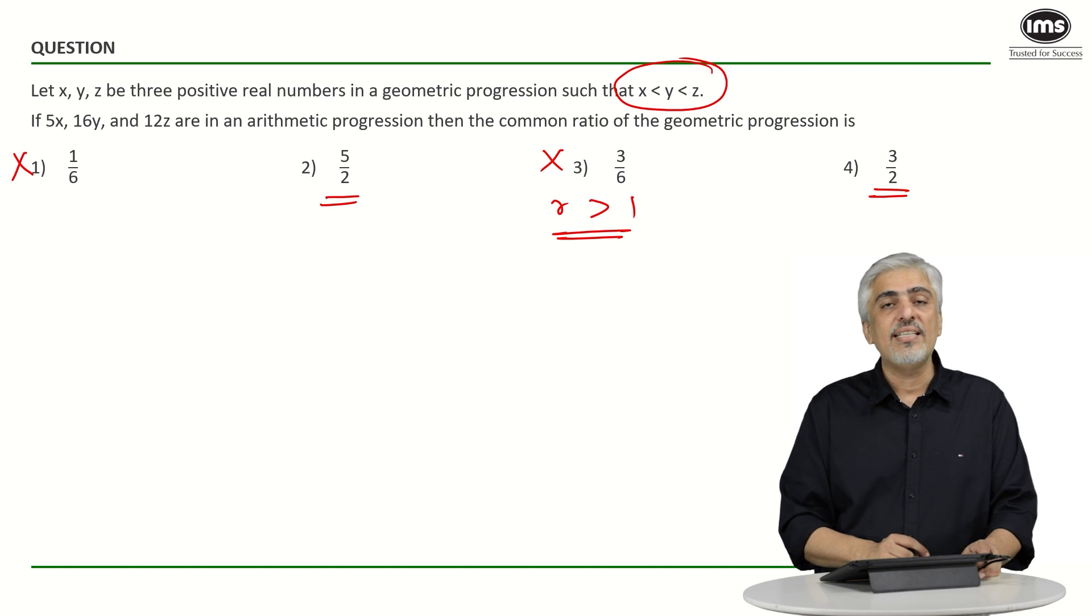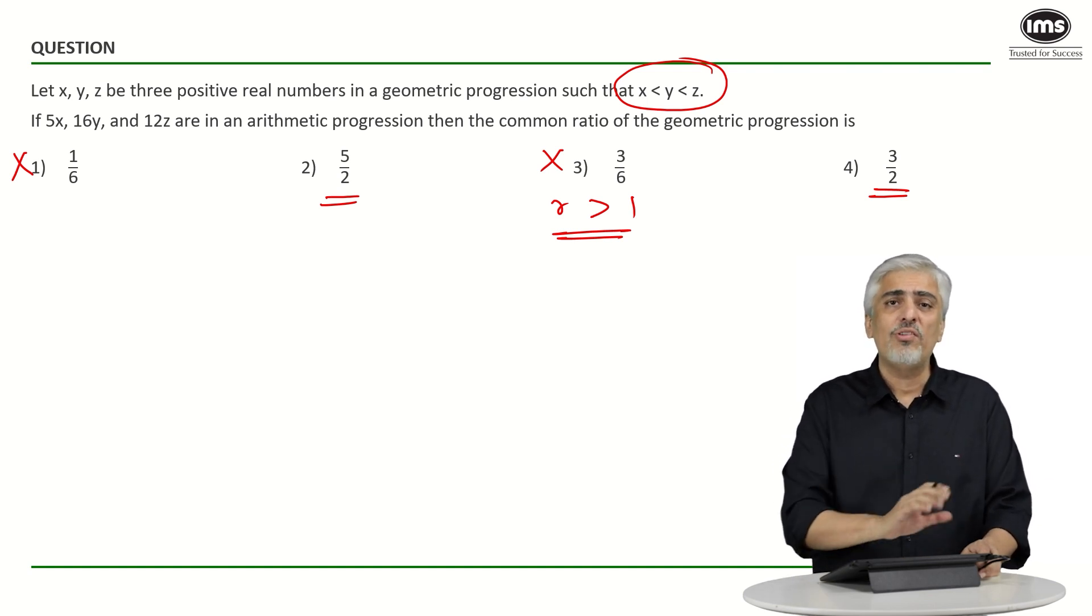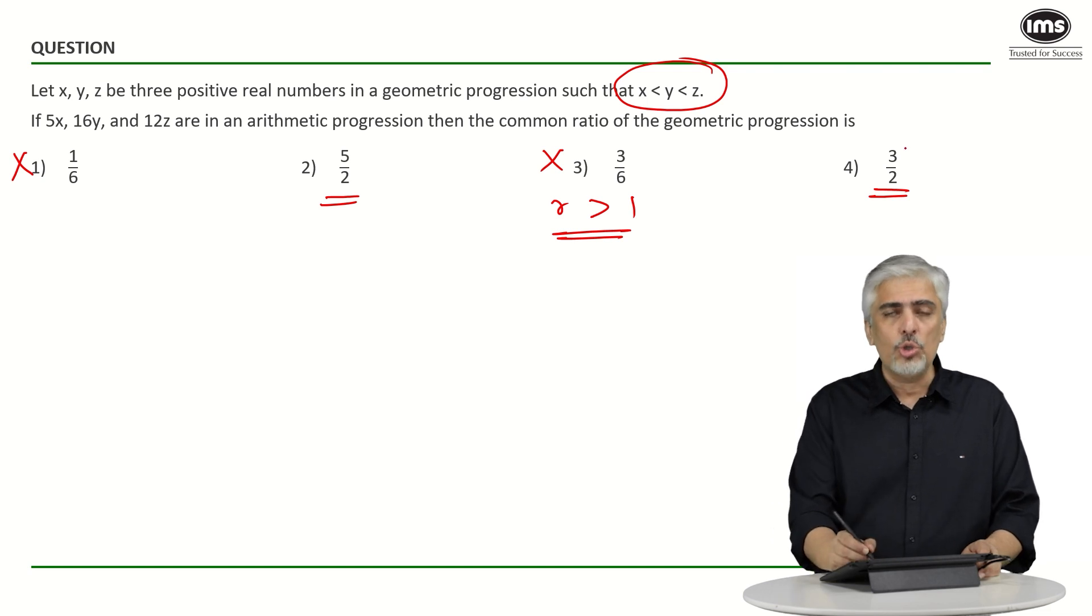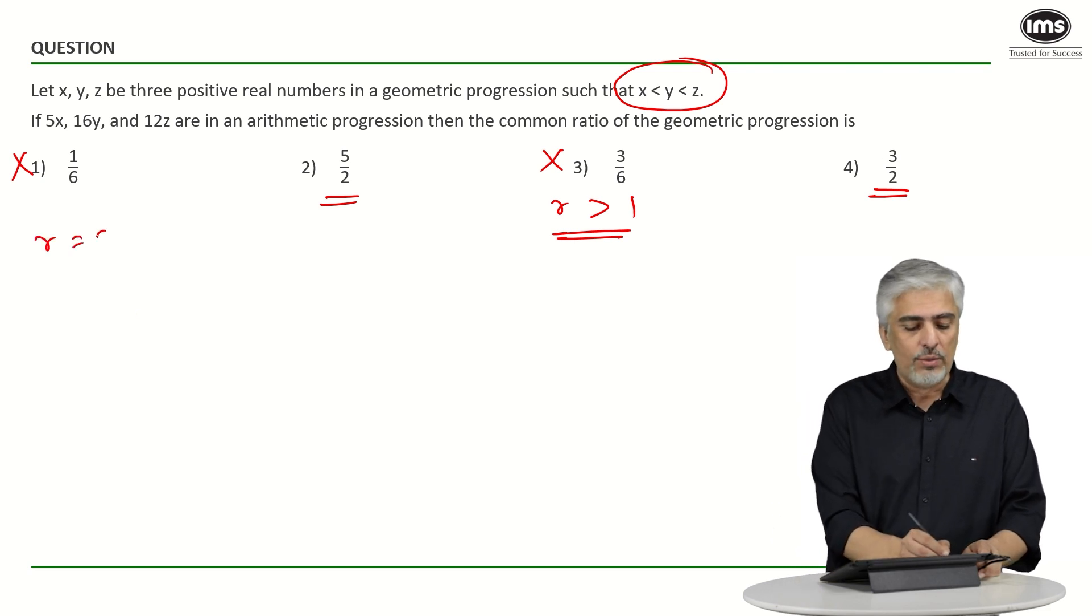Both the remaining options have a denominator 2. That is, r is either 5 by 2 or r is 3 by 2. Since I already know that r is 5 by 2 from the previous method, I'm going to just show you by taking r as 3 by 2 and see what happens.